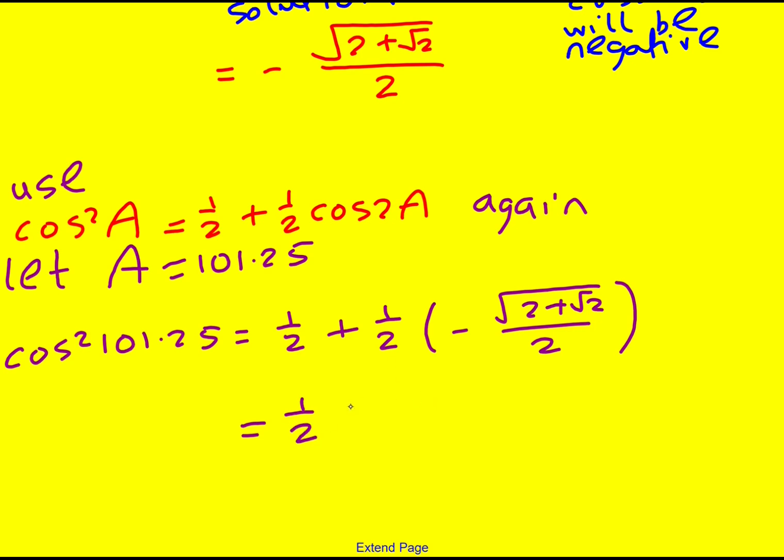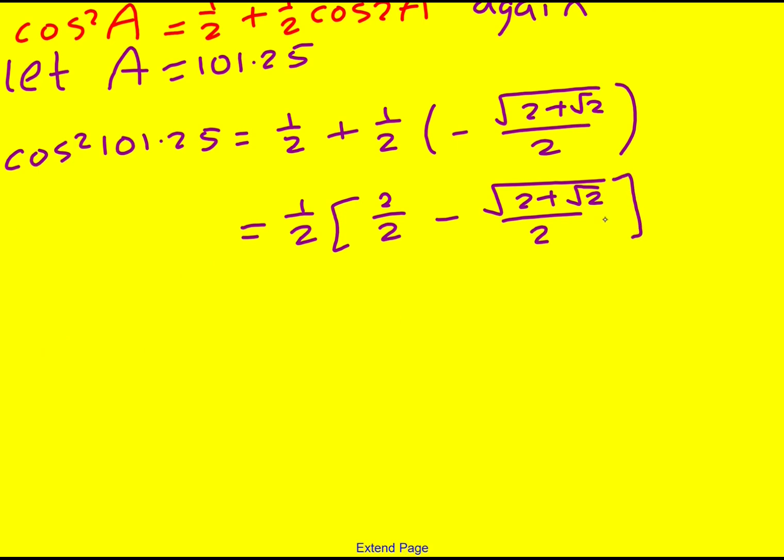I will factorize out the half now. So it would be 1 or 2 over 2 again minus root 2 plus root 2 over 2. So 2 minus root 2 plus root 2 over 4.